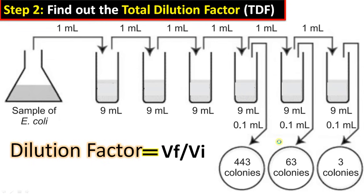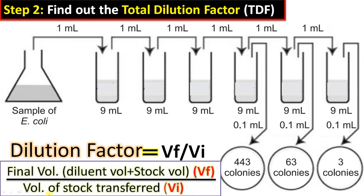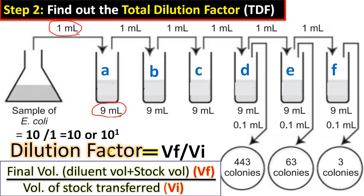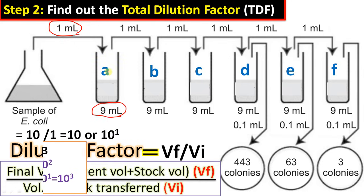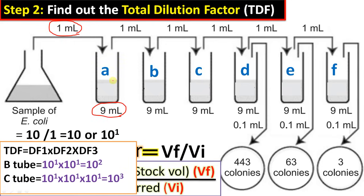Step two: find out the total dilution factor. The dilution factor equation is VF divided by VI, that is final volume divided by initial volume. Final volume means diluent volume plus the volume transferred from the stock solution. Let us label the test tubes A, B, C, D, E, and F. In test tube A, the dilution factor is 10 ml divided by 1 ml, which equals 10 or 10 raised to 1.